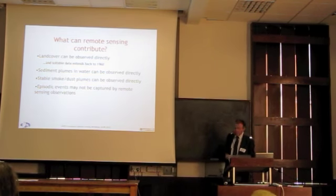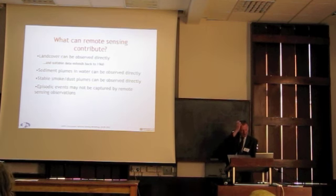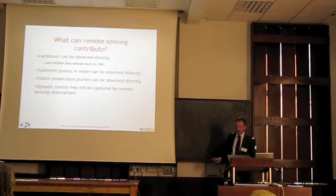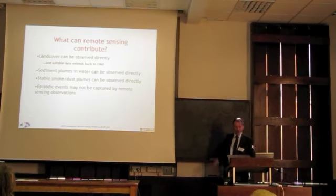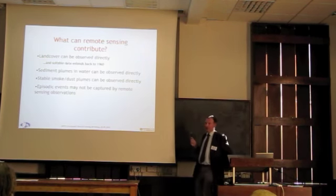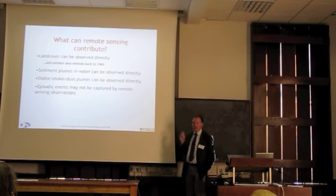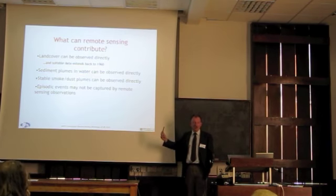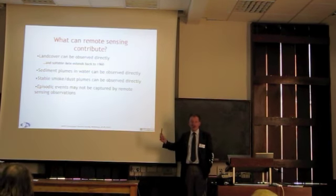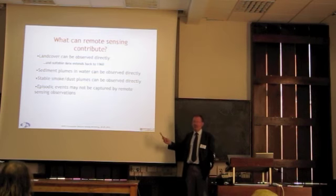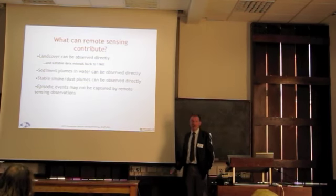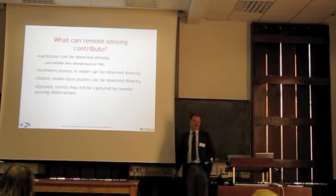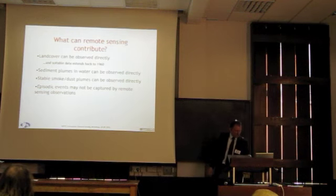Sediment plumes in water — we can see those directly. Smoke or dust plumes we can observe directly if they're stable and don't change much over time. One of the big problems is episodic events, where a smelter, for example, emits a great big plume of pollution over the course of an hour or a week. If your satellite overpass misses that window, you don't see it. So episodic events are a significant problem.